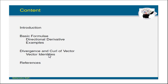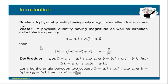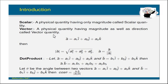First we start the introductory part of this unit. What is scalar quantity? As we know, a physical quantity having only magnitude is called a scalar quantity. And for the vector quantity, a physical quantity having both magnitude and direction is called the vector quantity.